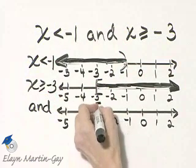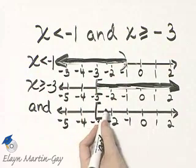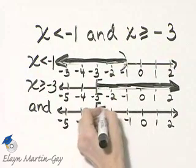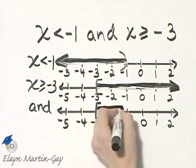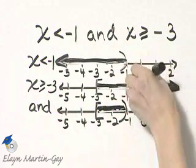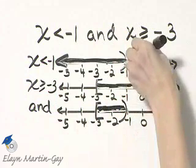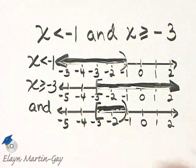Notice right at negative 3, that's where the overlap or the intersection of shading has started. Both number lines are shaded until we reach negative 1, and I'll put a parenthesis here because only on this number line has negative 1 been shaded. Not here, but here, so I'll put a parenthesis there.